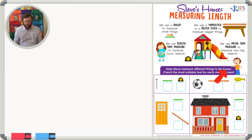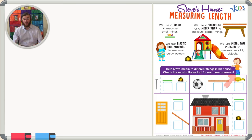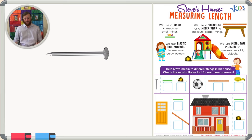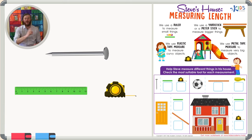Now let's read the directions for our worksheet and get started right away. 'Help Steve measure different things in his house. Check the most suitable tool for each measurement.' First we have a nail, and our two choices for measurement are a ruler or a metal tape measure.